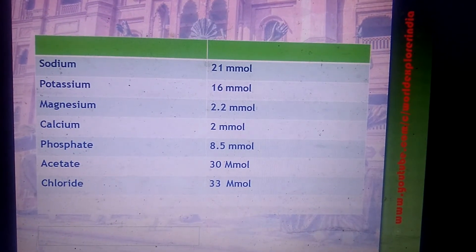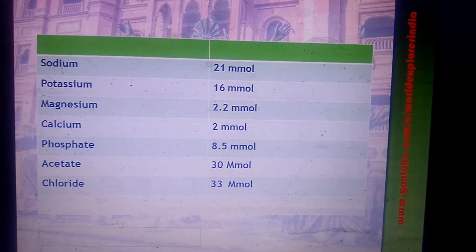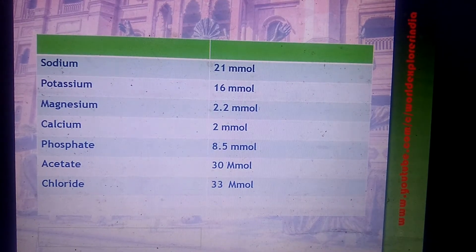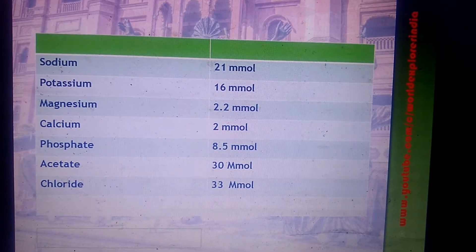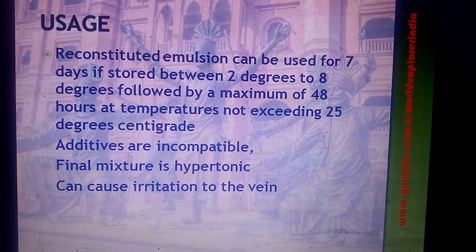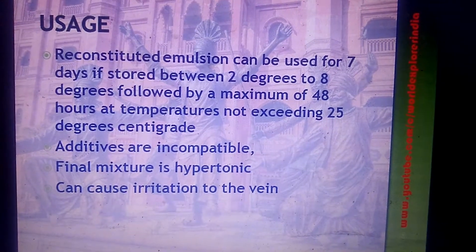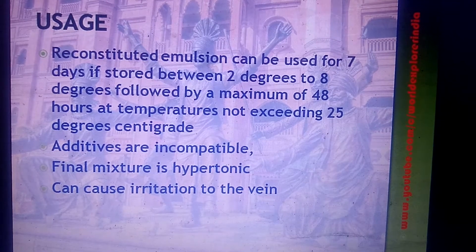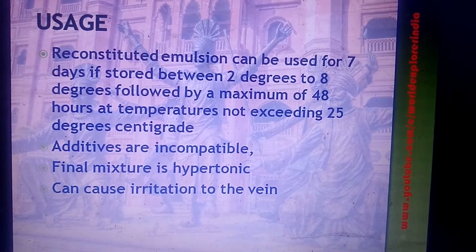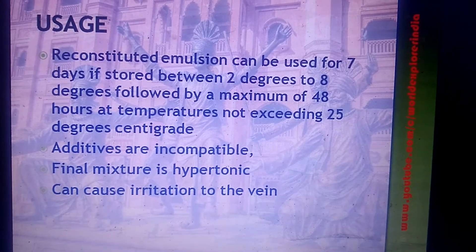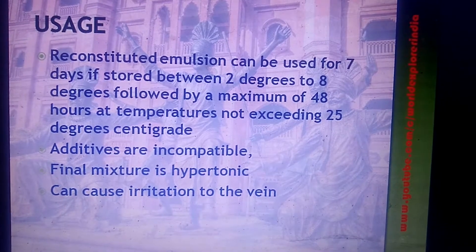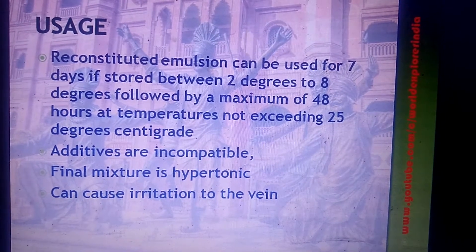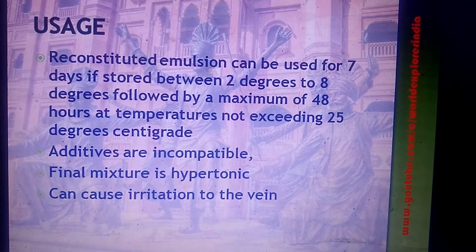The electrolytes present in TPN are sodium, potassium, magnesium, calcium, phosphate, acetate, and chloride. The reconstituted emulsion can be used for seven days if stored at 2 to 8 degrees Celsius, followed by a maximum of 48 hours at room temperature not greater than 25 degrees Celsius.